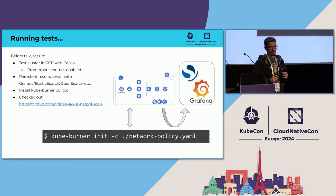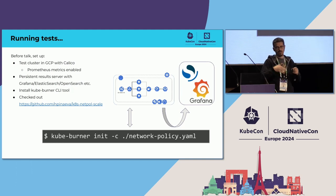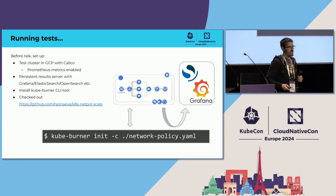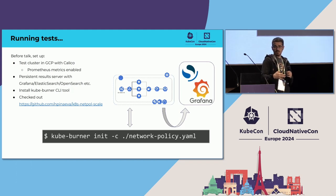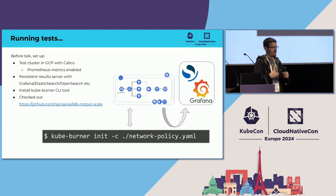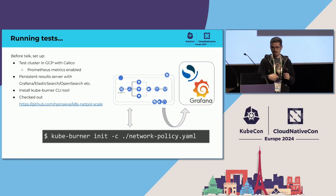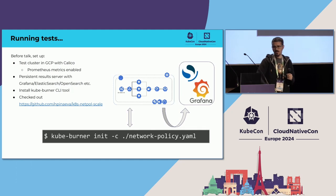I wanted to show two sides of the coin. Our performance improvements in the 3.27 release apply mostly to selectors and not to CIDR-based rules. So I've got two profiles to show later in the talk where we can compare the two and see a very different change in the 3.27 results. But before that, let's do a little demo and show how you run this tool. I've set up a cluster in GCP. CubeBurner now supports arbitrary Kubernetes clusters — it's not in any way tied to OpenShift.